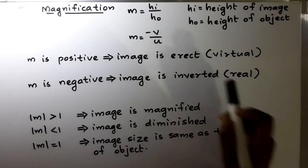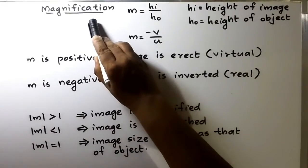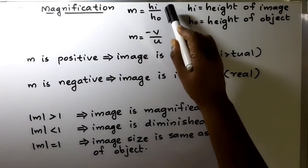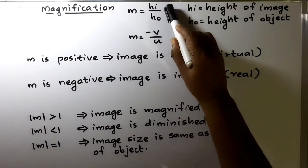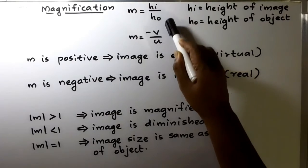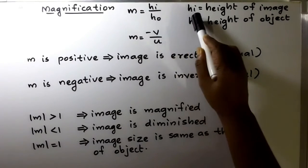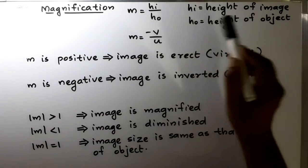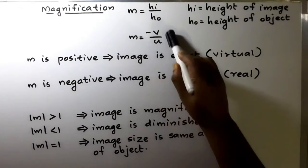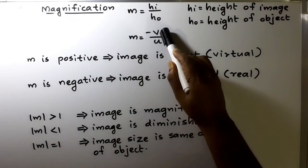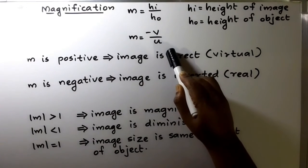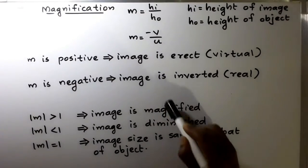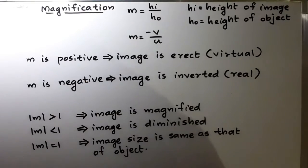The next important point is magnification, notated as M. M is the ratio between the height of the image and the height of the object: Hi by Ho. We can also calculate it with the formula M is equal to minus v by u.